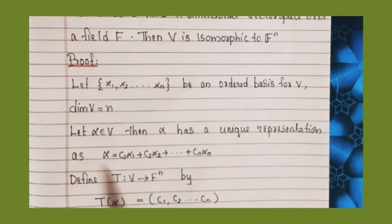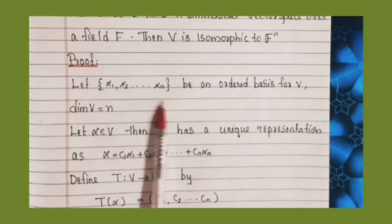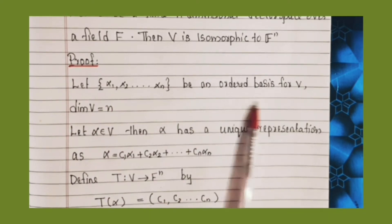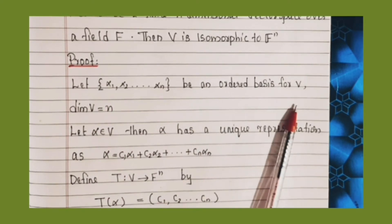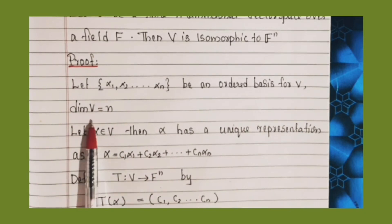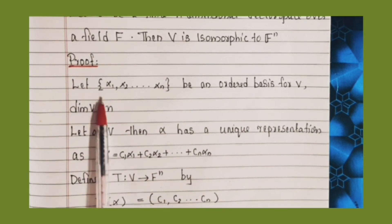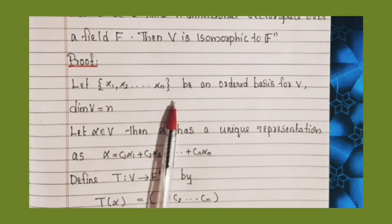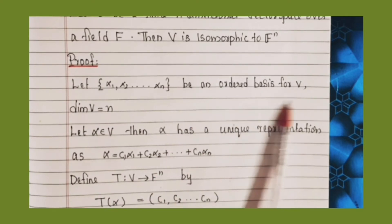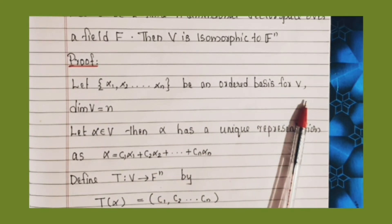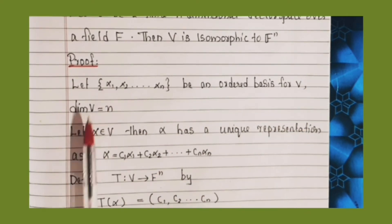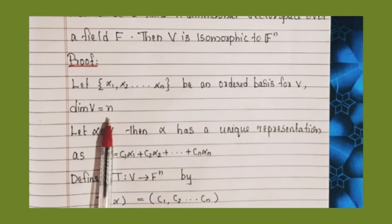Proof: Let the set {α₁, α₂, ..., αₙ} be an ordered basis for V, where dimension of V is equal to n.